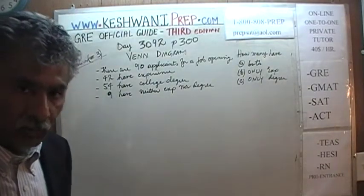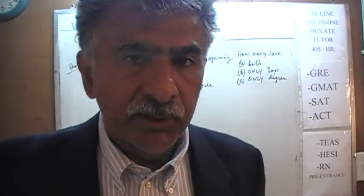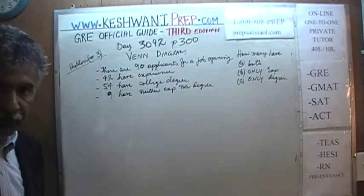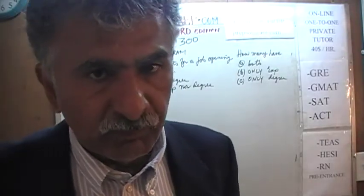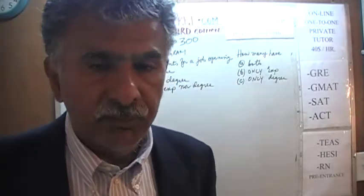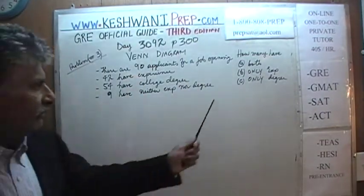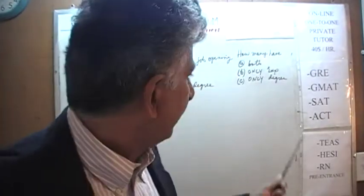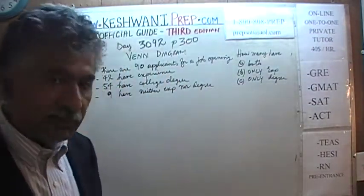As you can see the problem is already on the blackboard. We are told that we have 90 applicants for a job. Of those 90 people who applied, 42 have some kind of experience. 54 also indicate that they have college degrees. 9 of them have neither. The question is: how many have both a college degree and job experience, how many have only experience, and how many have only degrees.